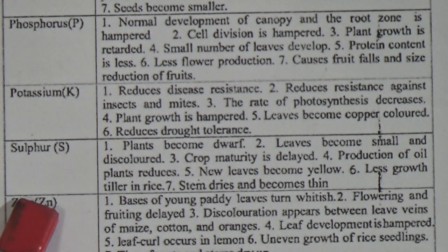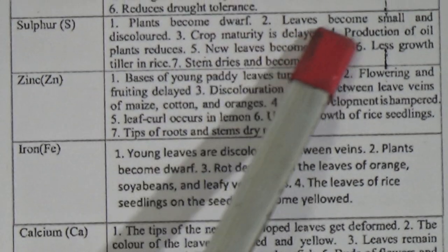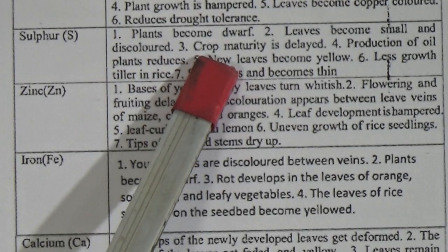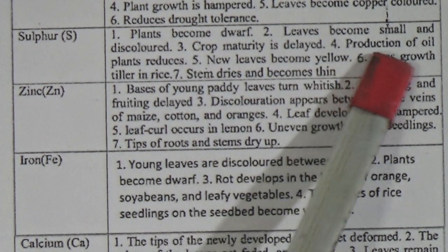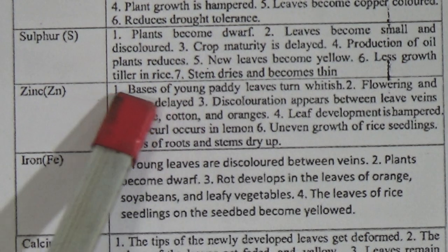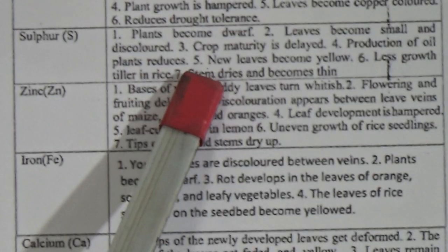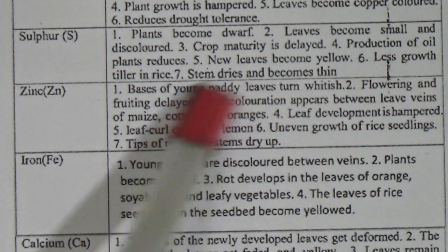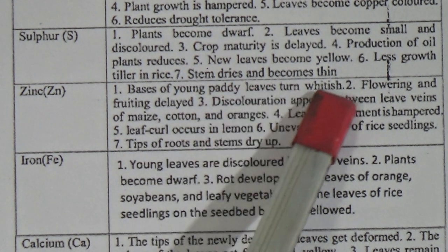Now we will see the deficiency symptoms of Sulfur. 1. Plants become dwarf. 2. Leaves become small and discolored. 3. Crop maturity is delayed. 4. Production of seeds reduces. 5. New leaves become yellow. 6. Less growth of tillers in rice. 7. Stem dries and becomes thin.